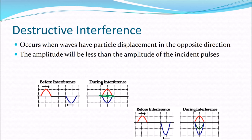However, on the other side, the blue wave pulse and the red wave pulse come back and keep going at the same speed, the same wavelength, and the same amplitude they had before the interference.